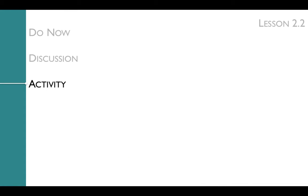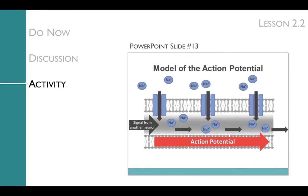After students have had time to model the action potential themselves, you'll come together as a class to review the entire process using slide 13, which is heavily animated. A signal is received from another neuron, triggering the first sodium channel to open. Because of diffusion, sodium ions enter the axon, moving down their concentration gradient from high concentration outside to low concentration inside. That entry of sodium ions makes the inside of the axon more positive at that point, which triggers the next sodium ion channel to open, and the process repeats itself.